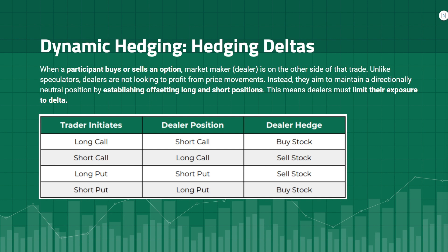When we analyze the options market, the focus is on the perspective of the market makers, also known as dealers. Dealers play a significant role by providing liquidity and facilitating trading in the options market. They can have a substantial impact on the underlying price and are crucial from a flows perspective. A dealer is not in the business of speculation — they profit on commissions and spreads, so they aim to maintain a directionally neutral position by establishing offsetting long and short positions.